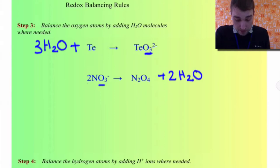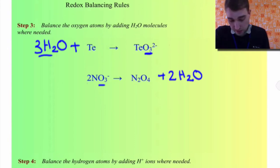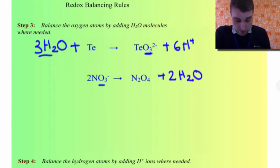The next step is to balance for hydrogen by adding hydrogen ions where required. We've got six hydrogens on the left-hand side of the top equation and none on the right, so we need to add six hydrogen ions to the right. For the bottom equation, we've got four hydrogens on the right-hand side, so we need to add four hydrogen ions to the left.